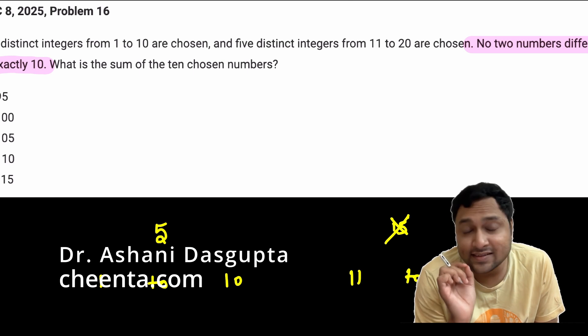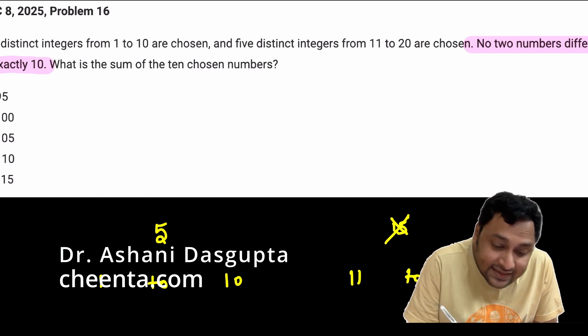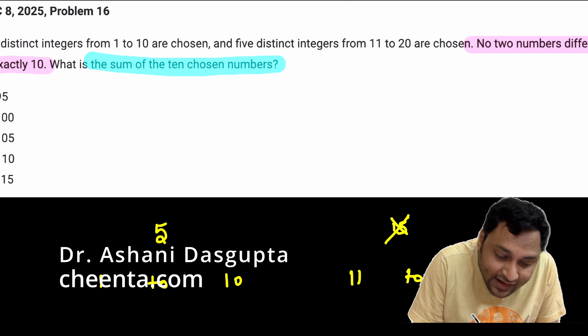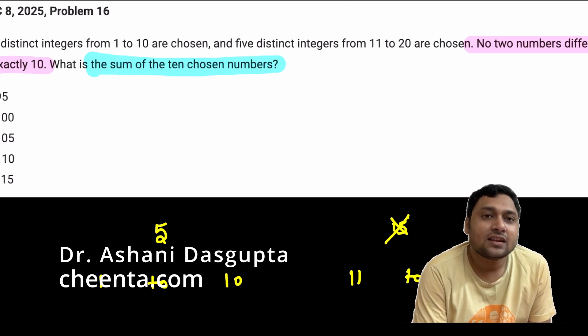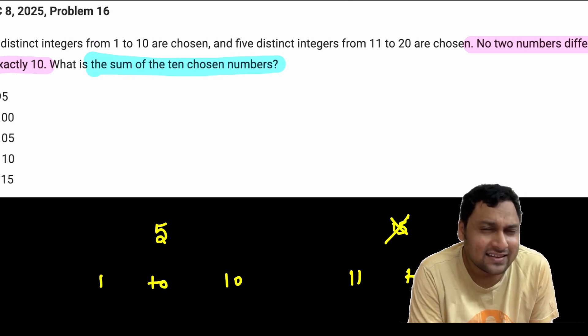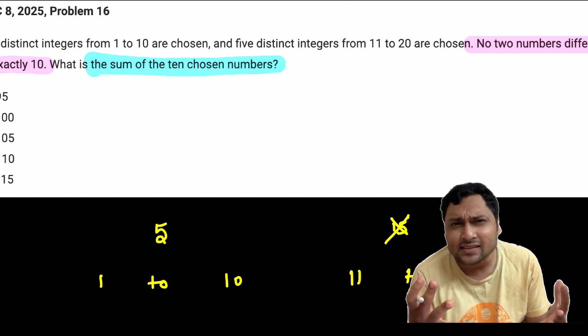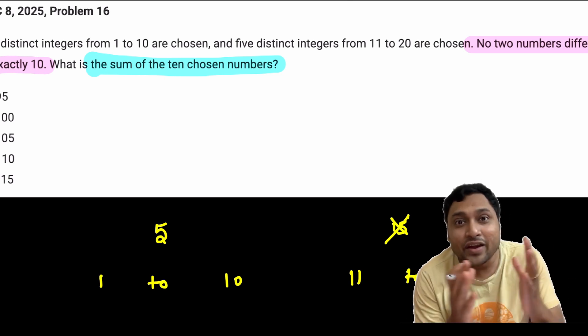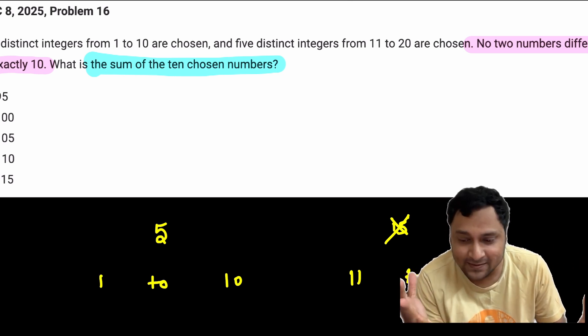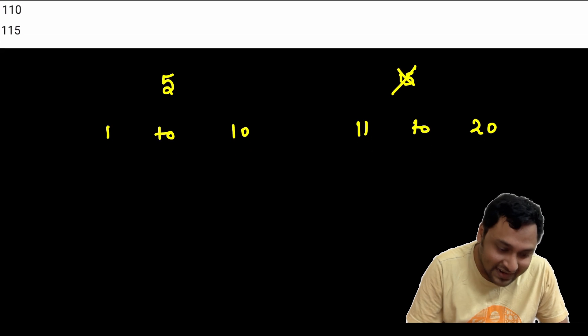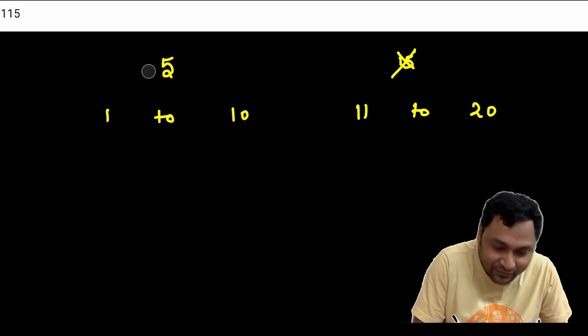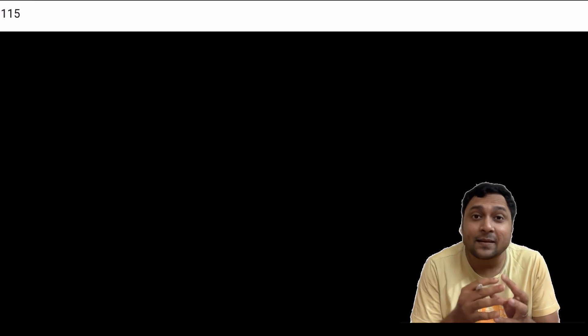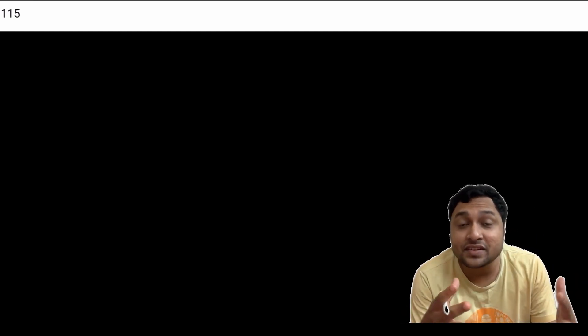Now, the question is this. What is the sum of the 10 chosen numbers? Now, you might think, how can we even do this? We don't know which numbers are being chosen. How can we find the sum of the numbers? Well, let's think carefully and we will see how to do it. And we will use something called complementary counting.